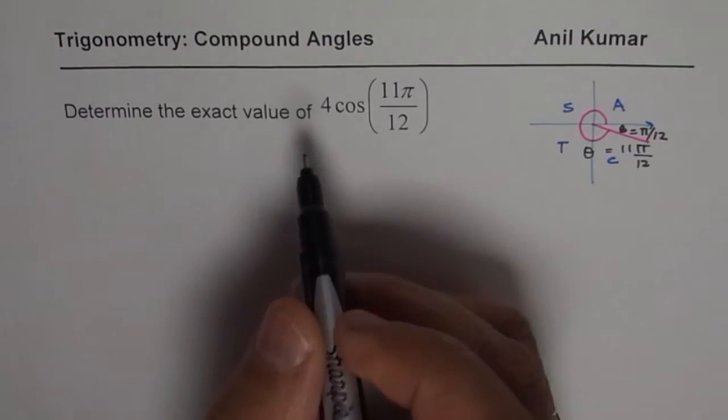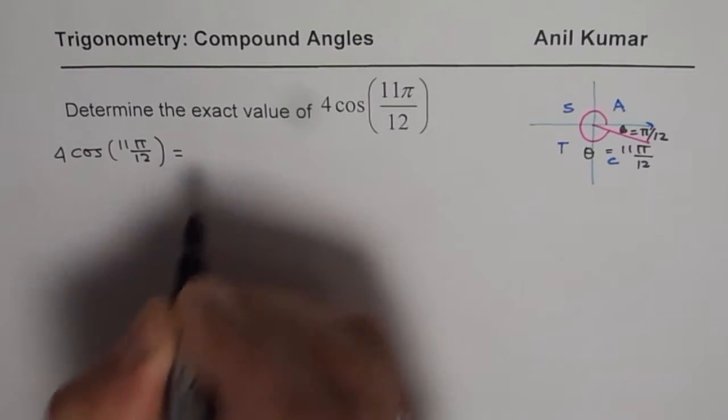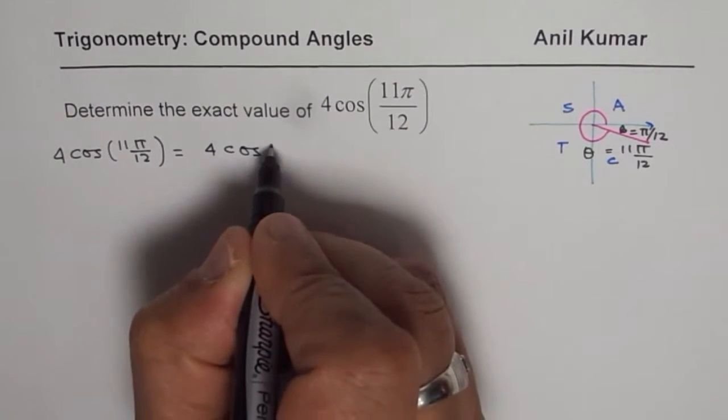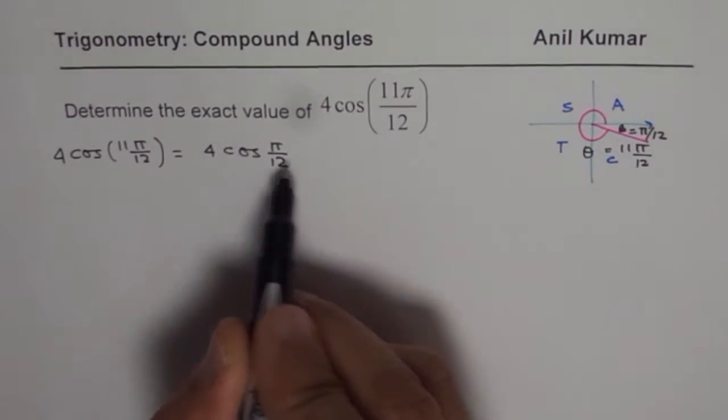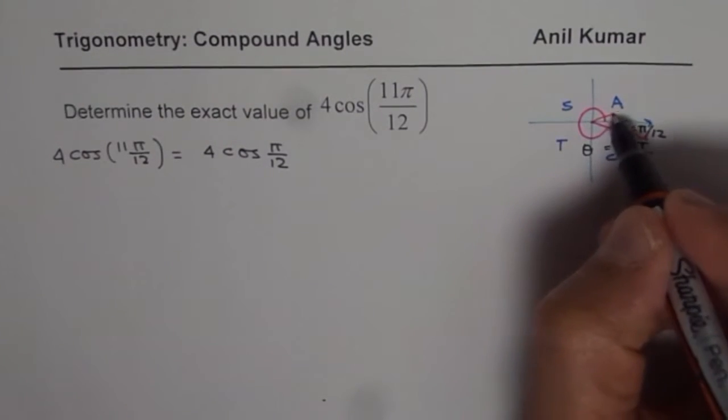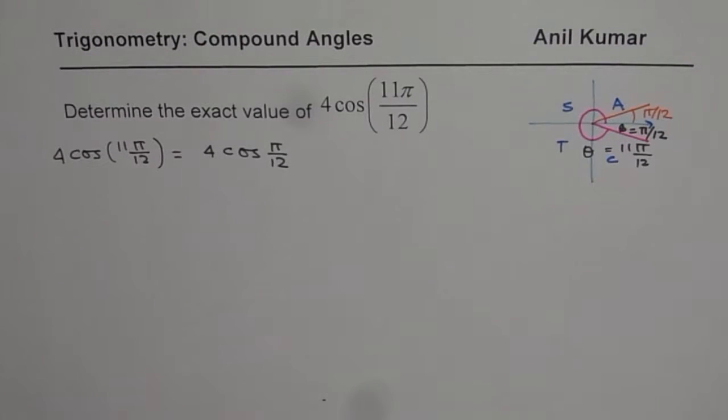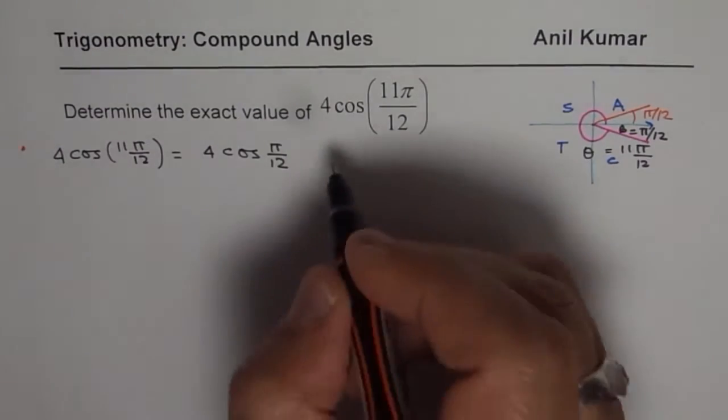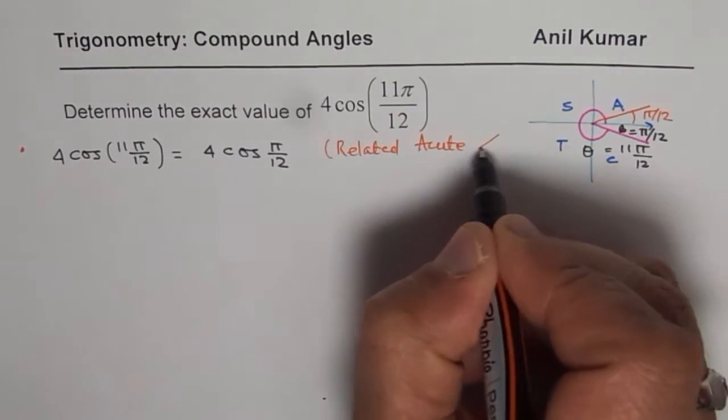So we can write 4 cos 11π/12 as equal to 4 cos π/12. You get the idea. Acute angle is π/12, cosine is positive. So cos of 11π/12 is same as cos of π/12. So that is the first thing, which you should do. So find the related acute angle and relate your expression to related acute angle. So that is the first step. So we got related acute angle here.